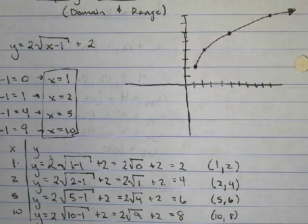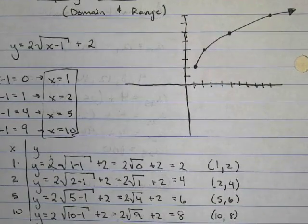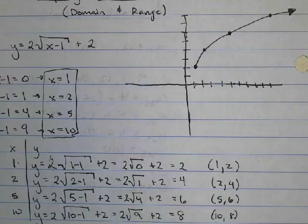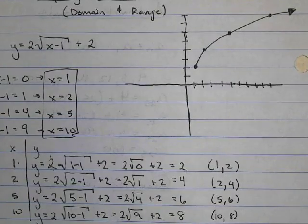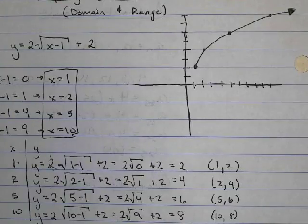We first find our specific x values by setting the radicand equal to 0, 1, 4, and 9. Then we plug those x values into our original function to find our y values.